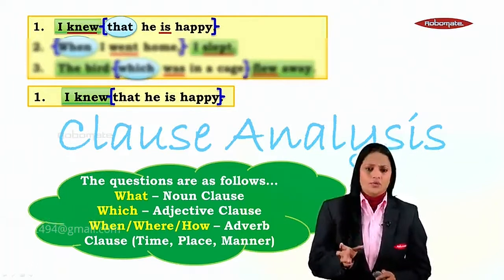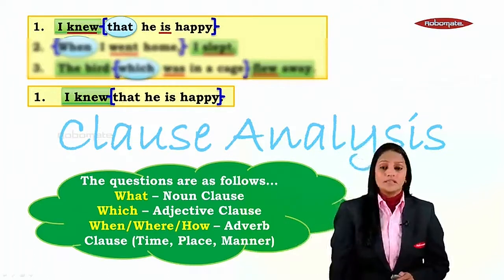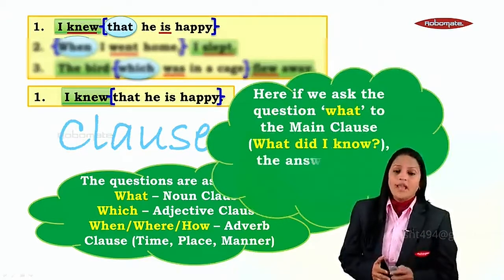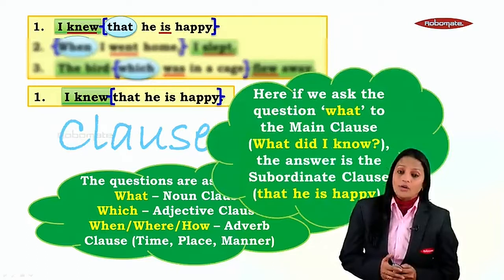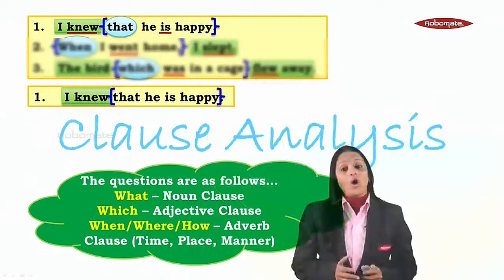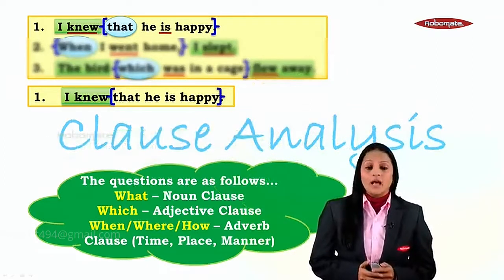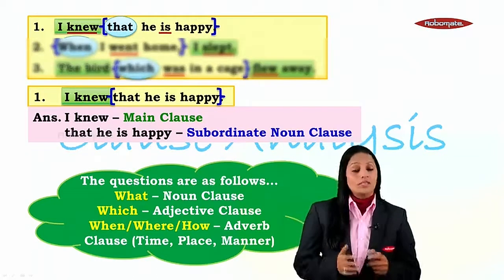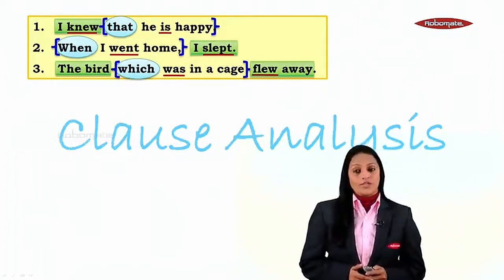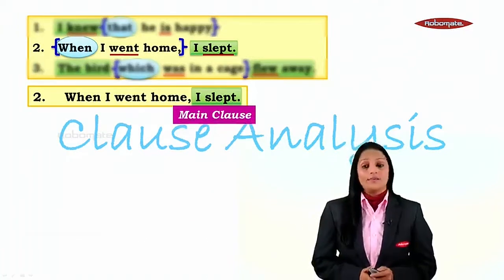Let's see the first example: 'I knew that he is happy.' The main clause is 'I knew' and the subordinate clause is 'that he is happy.' Now, which question can I ask to the main clause so that I get the subordinate clause as the answer? We ask 'what' — what did I know? The answer is 'that he is happy.' Because it answers the question 'what', it is a noun clause. So: 'I knew' — main clause; 'that he is happy' — subordinate noun clause.